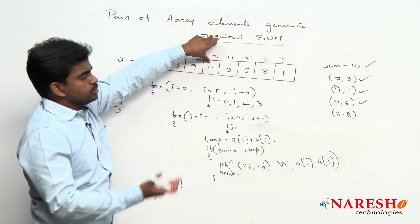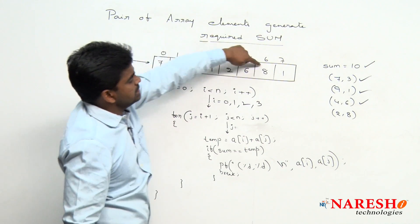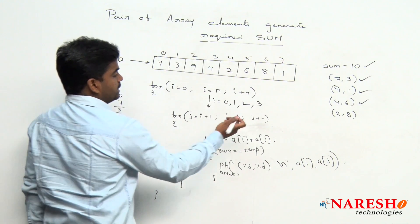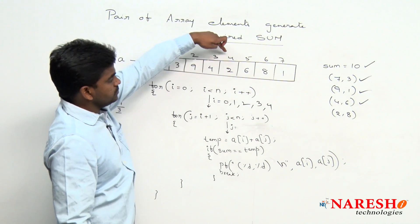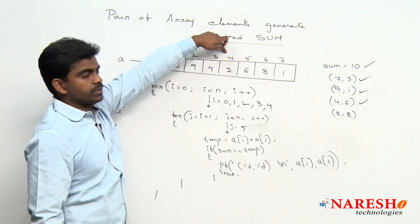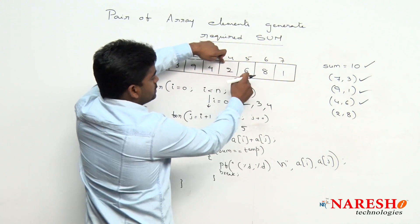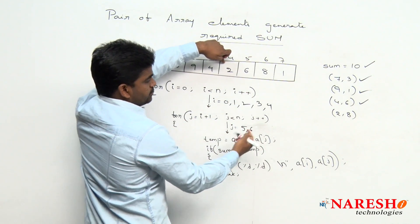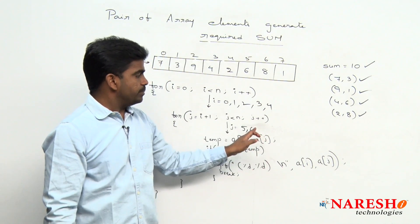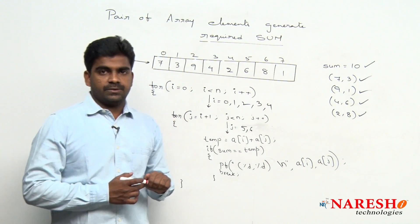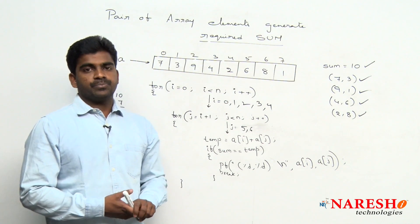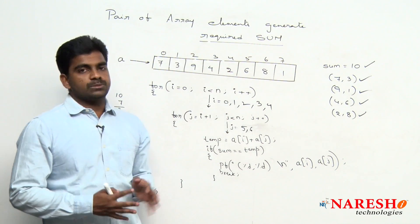If you don't break after finding 4 comma 6, continuing to check 4+8 and 4+1 is no use — that's why we break. Now i becomes 4 (element 2): j=5 gives 2+6=8, no use. j=6 gives 2+8=10 — yes, that's the last pair! It prints 2 comma 8 and breaks. The remaining index 7 is not checked. All 4 pairs are displayed exactly.